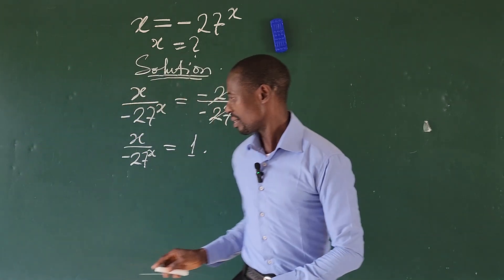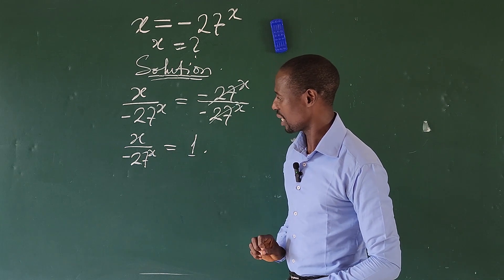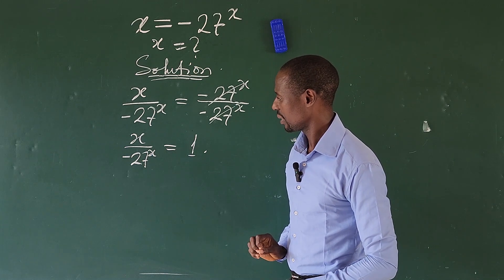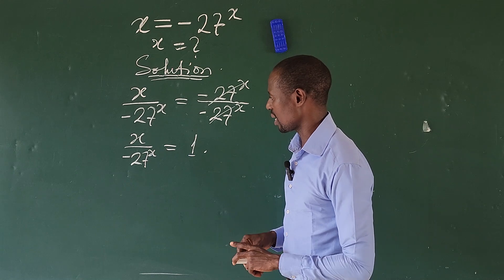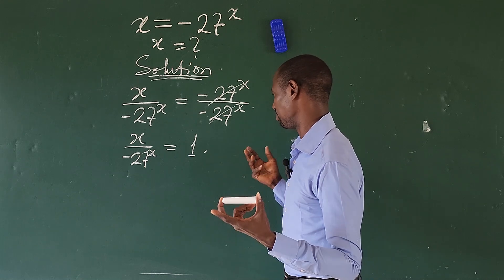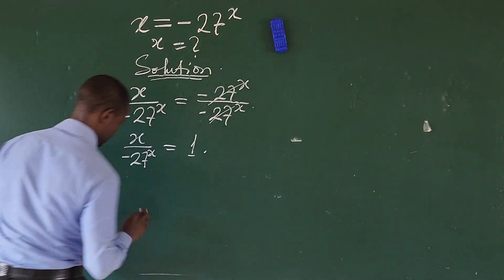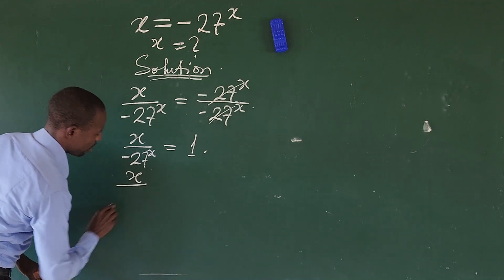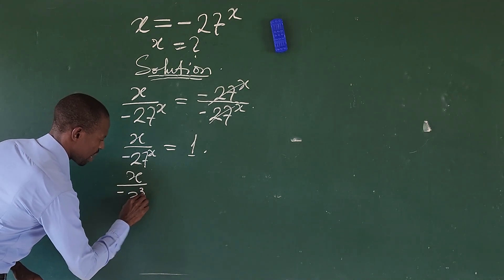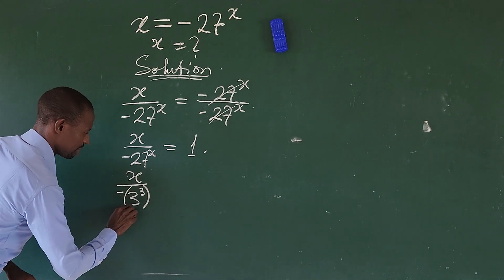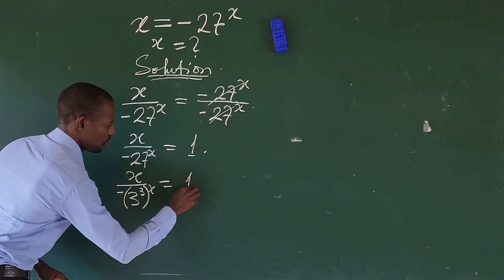Now I want to rewrite 27. We know that 27 can be written as 3 to the power of 3. So this now gives us x over minus 3 to the power of 3, all in brackets, raised to the power of x, equal to 1.